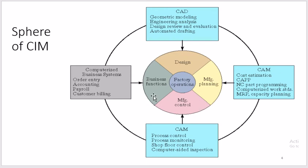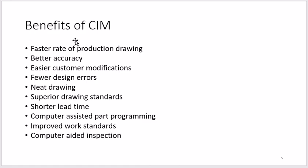The benefits of CIM: having control over every department reduces time — there's no need to physically go from one department to another to check status. Everything can be checked by simply sitting at a computer. There is a faster rate of production drawing on computer-aided design, better accuracy, and you can check the status of each step of production at any instant.